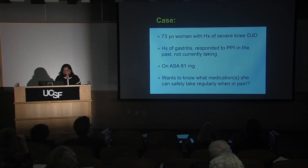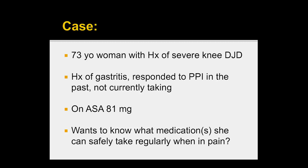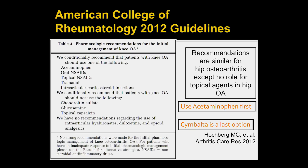Here's a quick case example: a 73-year-old woman with severe knee degenerative joint disease, a history of gastritis, who has responded to proton pump inhibitors in the past but is not taking them right now, and is on low-dose aspirin. She wants to know what medications she can safely take regularly when in pain. As you can see from this, we're really targeting controlling her pain and improving her function — we haven't found something to give her to just make it go away.